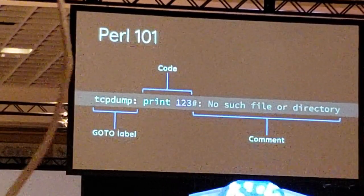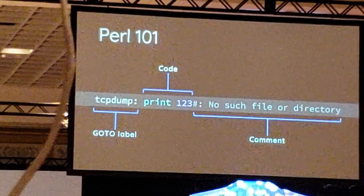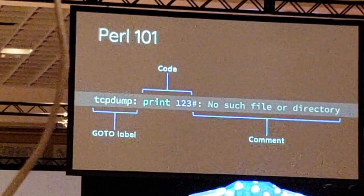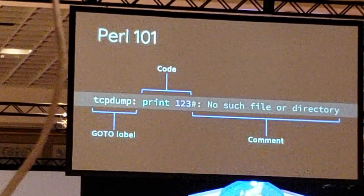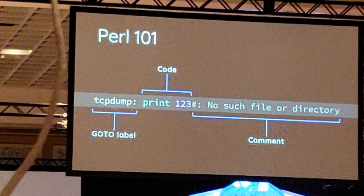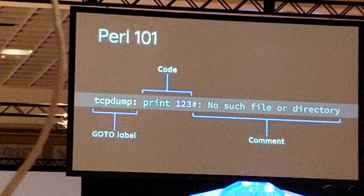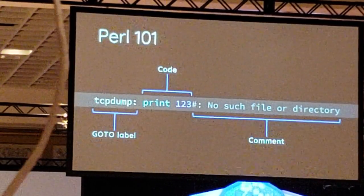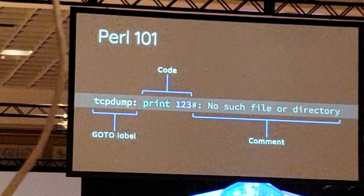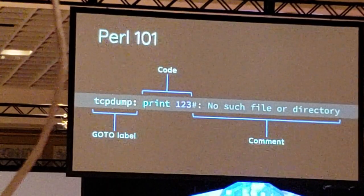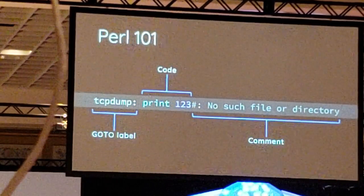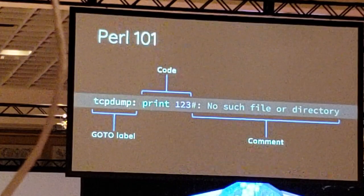So, the Perl trick works. Perl supports the goto label, so the colon in the filename becomes a label in Perl. And we use the hashbang to comment out the rest of the error message. So the standard error message becomes a valid Perl one-liner.